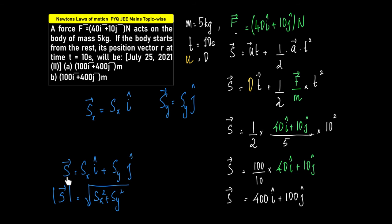If vector S can be written as Sx i plus Sy j, it actually means that the x component of this displacement vector is equal to Sx i and the y component of this displacement vector S in the y component is Sy into j.